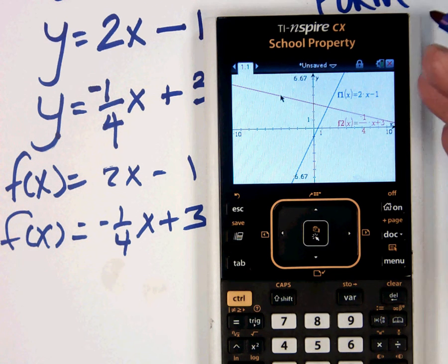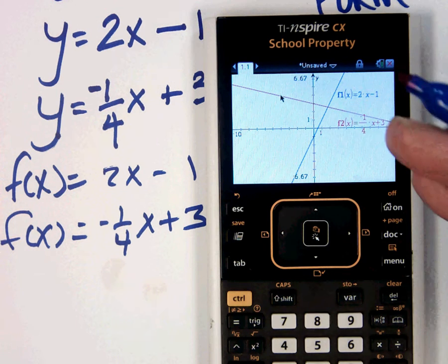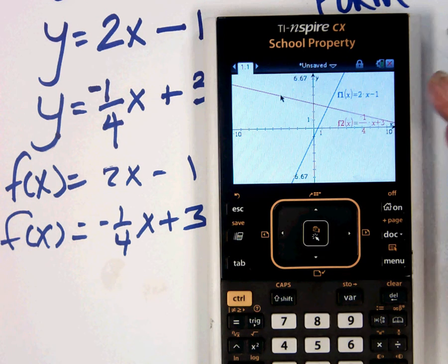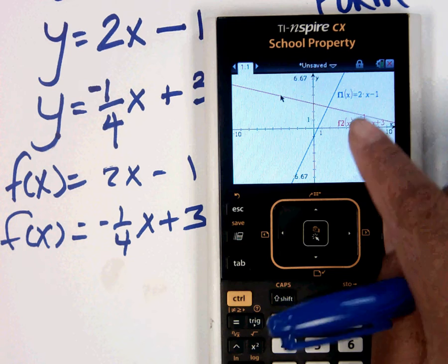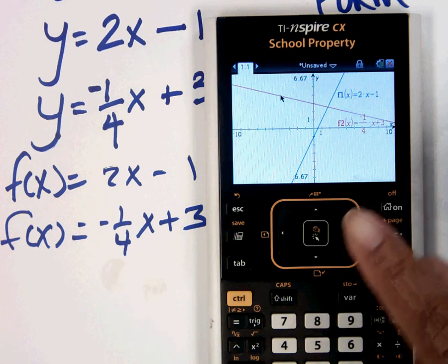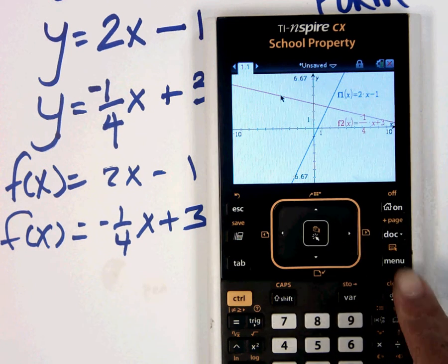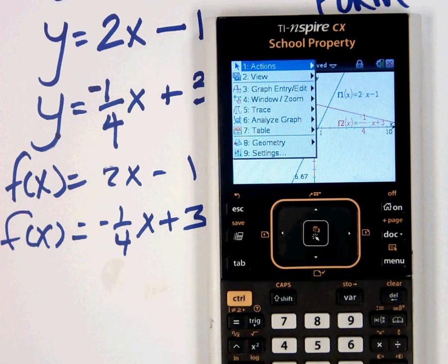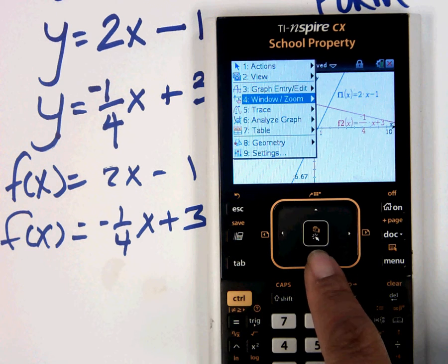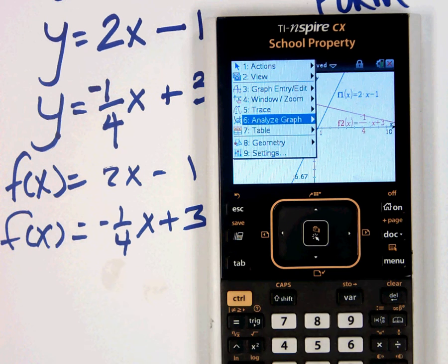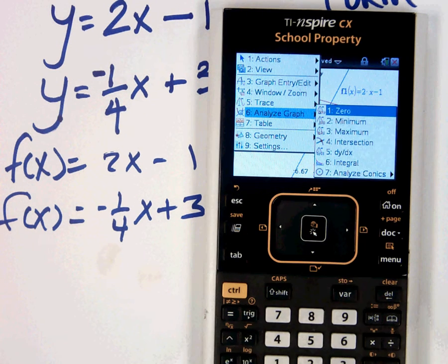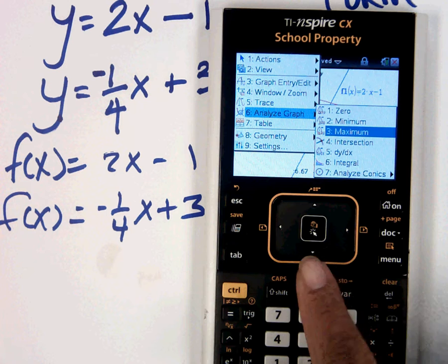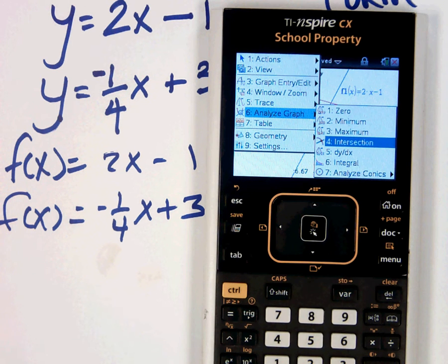How do we figure out what that is without getting it wrong? Menu 6, 4. What does that stand for? Well, first, Menu is our Action button. And now let's go down to Analyze Graph, because we want to analyze it to find the intersection. Menu 6, 4.